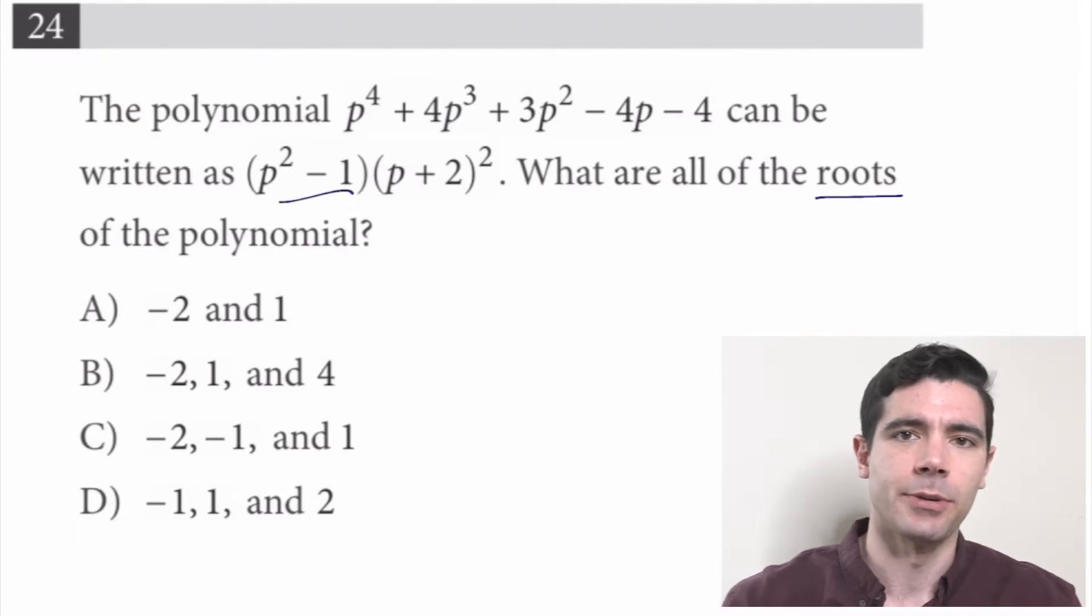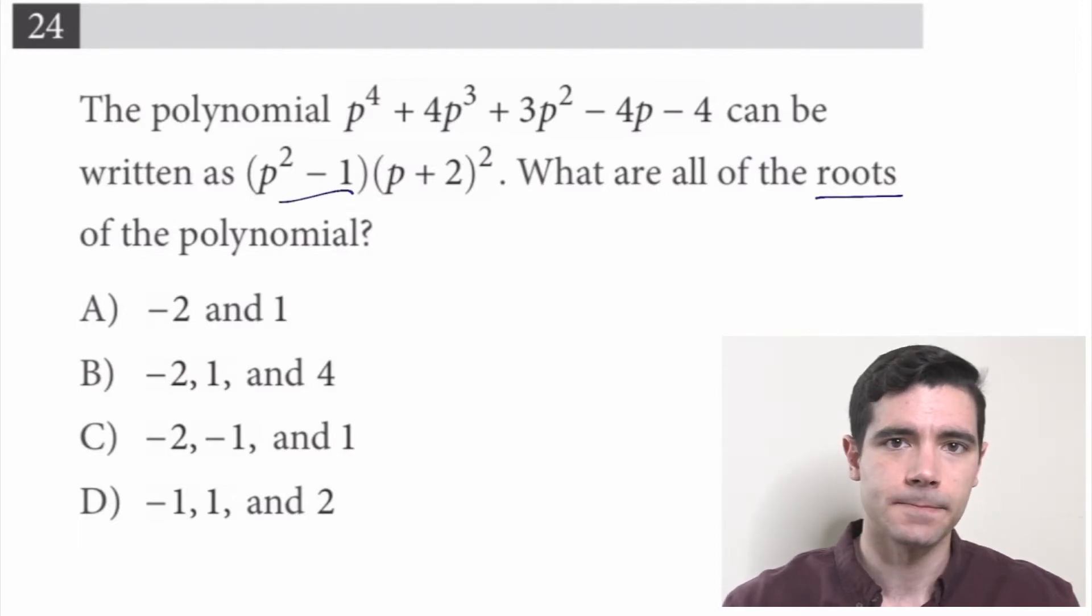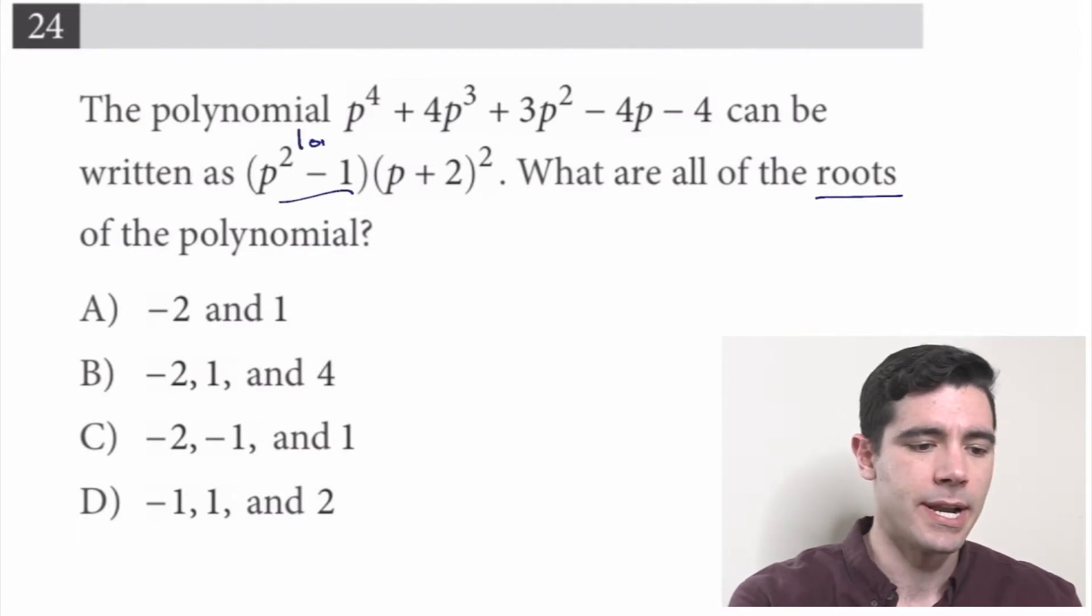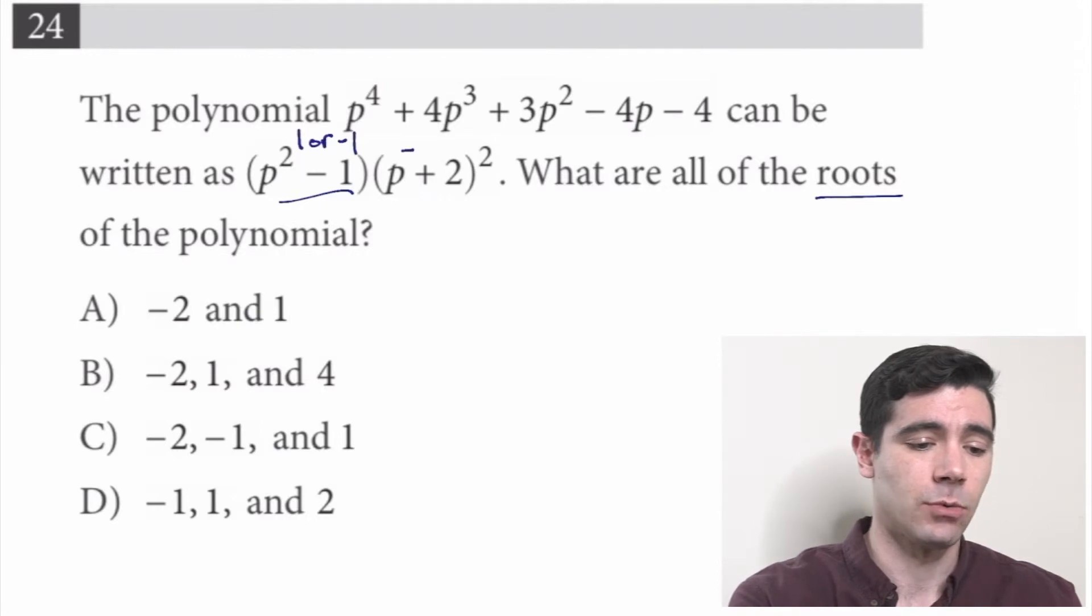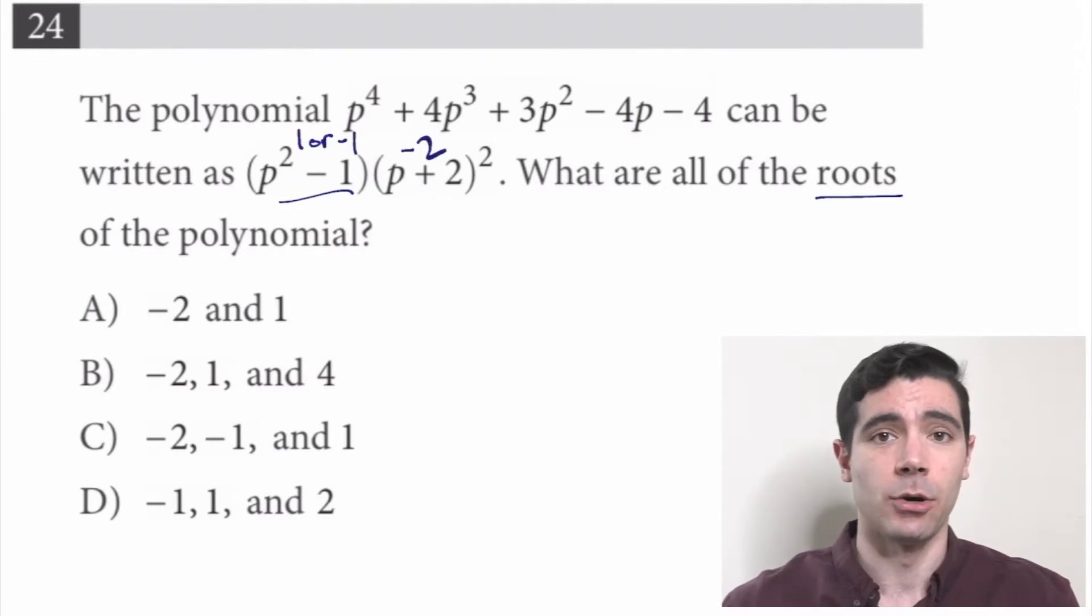What values would make this first binomial equal 0? p squared minus 1. Well, if p were 1 or negative 1, in either case that whole binomial would equal 0. And in the second binomial, it looks like if p were to equal negative 2, then that binomial would equal 0, and so that would be a root of the polynomial.